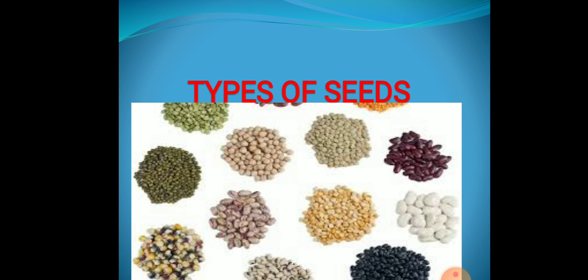Students, we see different types of seeds all around us. They have different shapes, color, size and texture. Some seeds are smooth while some are rough. Can you give examples of such seeds?